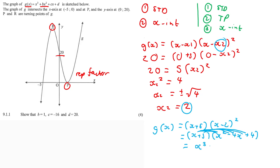This simplifies to x³ + x² − 16x + 20. So a = 1, which we already knew. b is also equal to 1 — that invisible 1. c is equal to −16 and d is equal to positive 20. And that is it for the question.